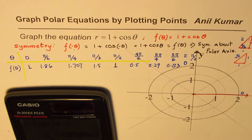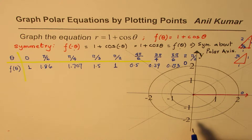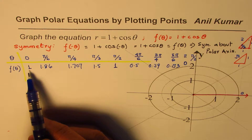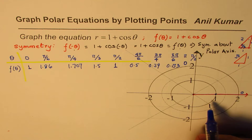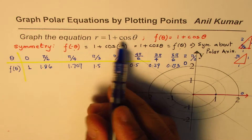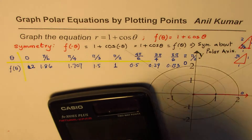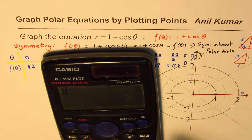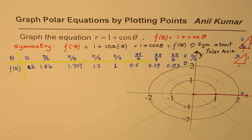Now let's plot these values on the graph. At theta equals 0 the value is 1 — wait, that is wrong. Since cos of 0 is 1, we get 1 plus 1 which should be 2. So let me correct that: the first point at theta equals 0 should be at r equals 2, not 1.